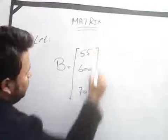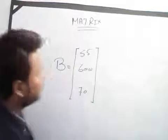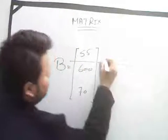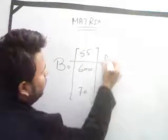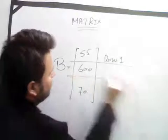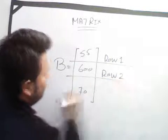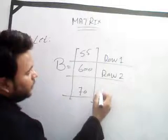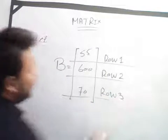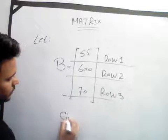So the rows are one, two, and three — that is three rows. The order of this matrix is three cross one. Thank you so much for watching this video. Goodbye.